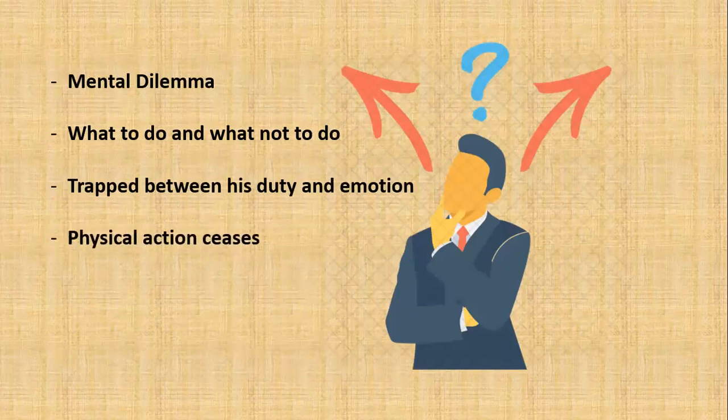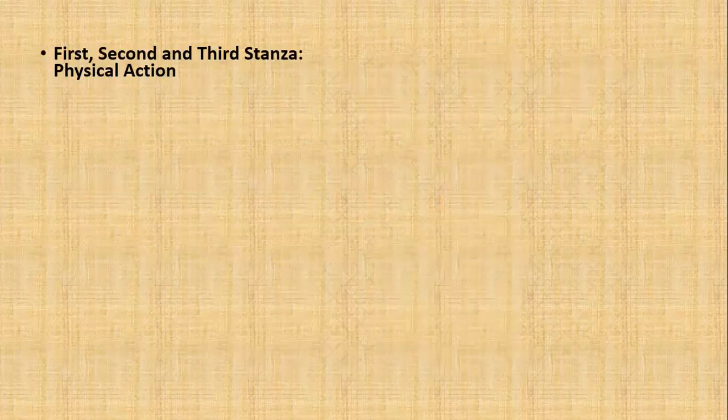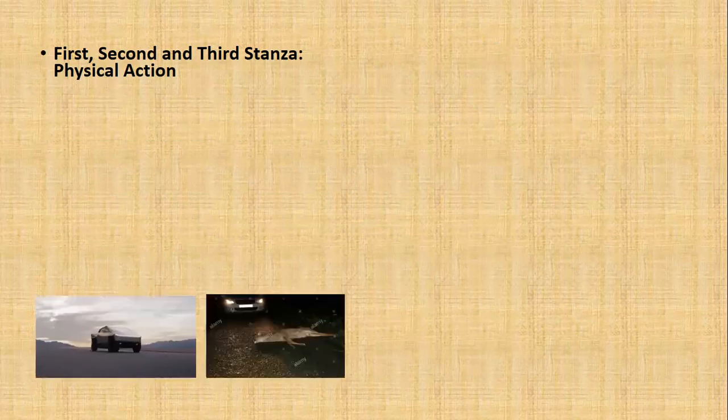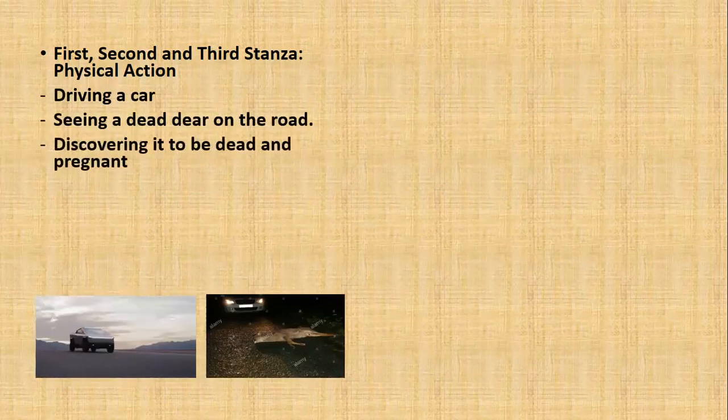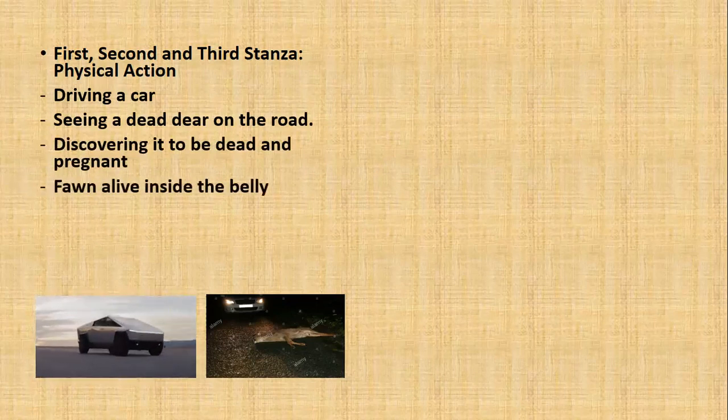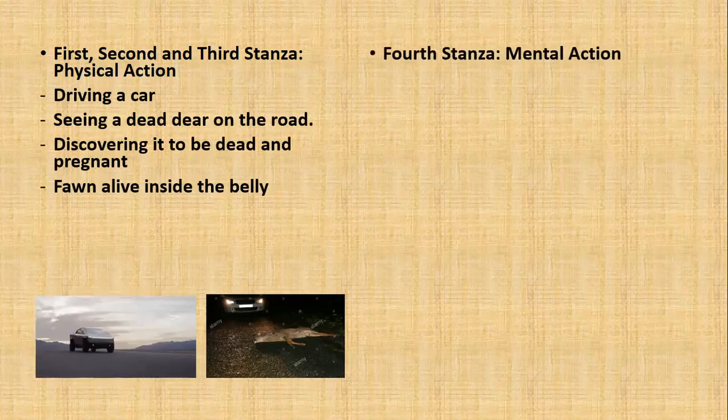When he realizes that the fawn is still alive, at this point even the physical action ceases. The first, second, and third stanzas of the poem deal with the physical action, because we notice the speaker driving a car and his act of seeing a dead deer on the road and discovering it to be dead and pregnant and also realizing that the fawn is alive inside the belly.